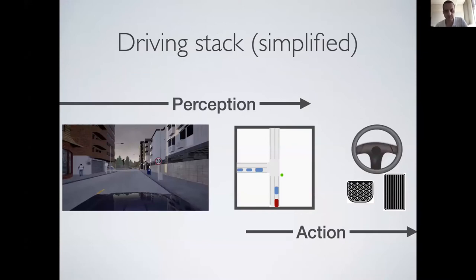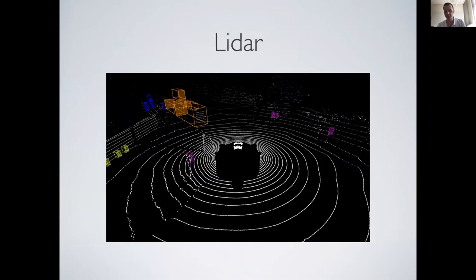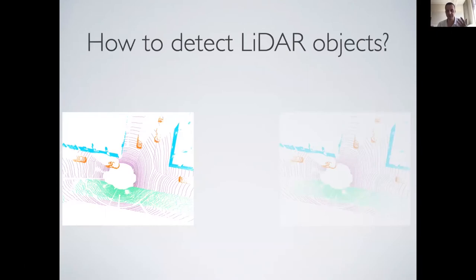This really involves two fairly challenging problems. Number one is trying to see the world, trying to perceive it. And then number two, once you actually see what's around you, you want to produce the best possible sequence of actions. Both parts of this problem are very interesting and quite hard. For the first part, what most people default to is using a very expensive sensor such as LiDAR — collecting lots of measurements, lots of annotations, and then building a very good 3D detector.